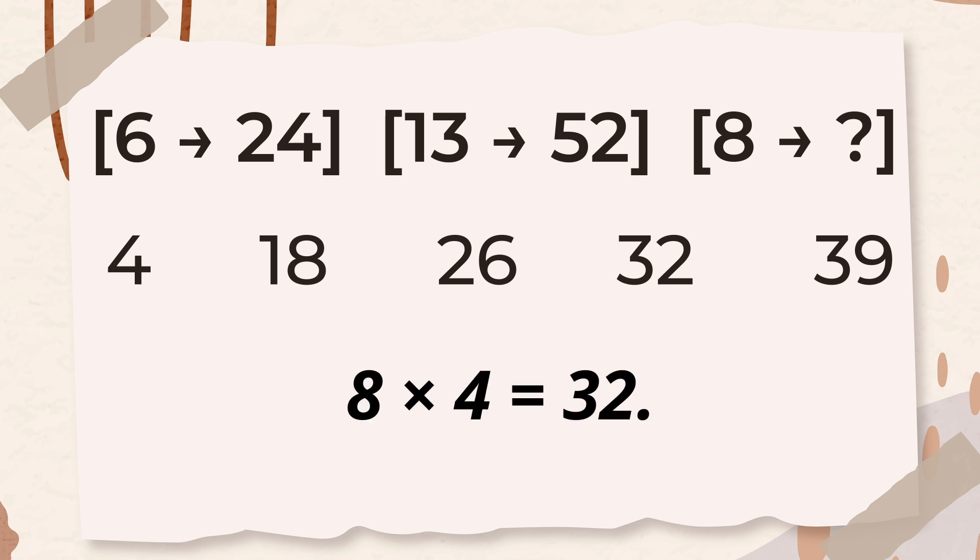The rule multiply the first number by 4 to get the second works in both pairs. So in the next pair, we should also multiply by 4. Therefore, 32 is the correct answer.